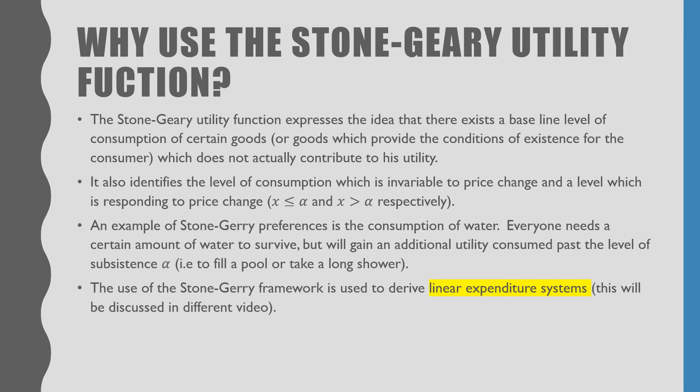The Stone-Geary Utility Function expresses the idea that there exists a baseline level of consumption of certain goods — goods which provide the conditions of existence for the consumer — which does not actually contribute to his utility. It also identifies the level of consumption which is invariable to price change, where Xi is less than or equal to Alpha, and the level which is responding to price change, where Xi is greater than Alpha.